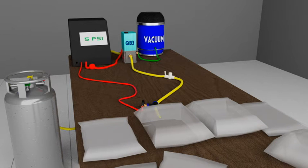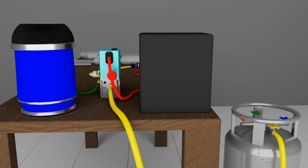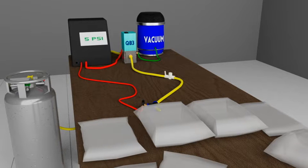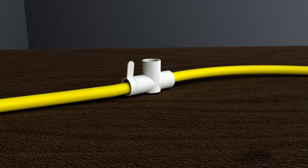First, a signal is sent to the QB3 to command the amount of pressure to be applied to the bags. The regulator applies positive pressure to fill the bag with test gas, and the bag is then isolated by a small valve.